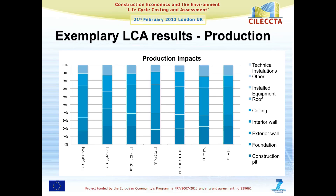You can then drill down the results further. This shows the impact of the production phase, where you can see where impacts are actually coming from — is it from the equipment installed, the walls, ceilings, or the foundation? In the next step, you can go even further down and see where impacts from the walls come from: is it the materials, the processing, or transportation processes? So you can really drill down from a very high level — just looking at life cycle stages of production, operation, and end of life — down to single materials and single energy carriers. LCA studies give you a lot of information.